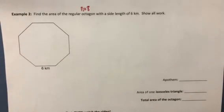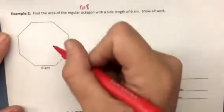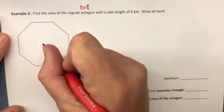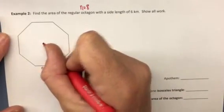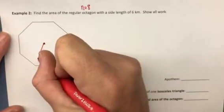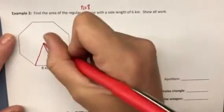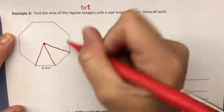And we are asked to find the length of the apothem, the area of the triangle, and the area of the regular octagon. So I'm just going to approximate the center. Looks like it's about there. And then I'm going to go ahead and draw in the triangles.